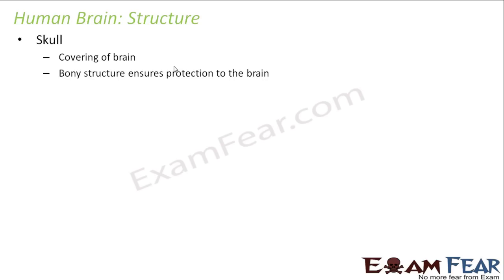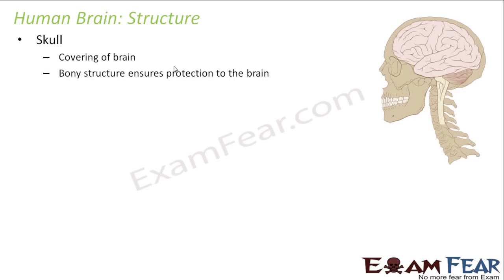The first structure to discuss is the skull. The skull is a covering for the brain. Since the brain is such a delicate organ performing so many important functions, it should be kept well protected inside the body. The skull is a bony structure which ensures protection to the brain. It is quite hard, rough, and tough, so even if you get hurt, it will not directly damage your brain because of the many protective coverings outside.